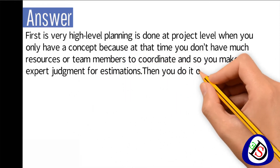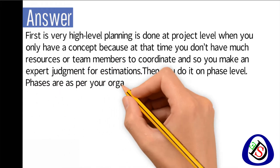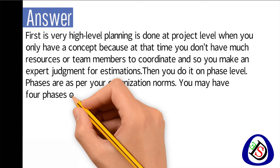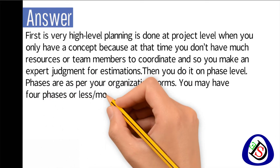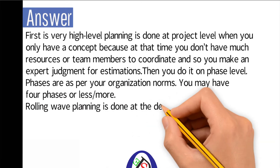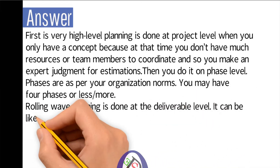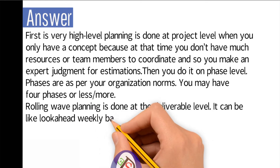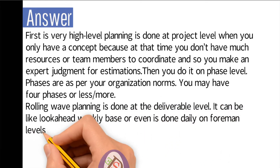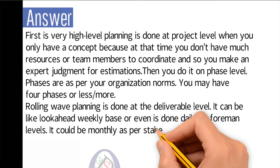Then you do it at the phase level. Phases are as per your organization's norms — you may have four phases, or less or more. Rolling wave planning is also done at the deliverable level; it can be a look-ahead on a weekly basis, or even done daily at the foreman level, or monthly as per stakeholder requirements.